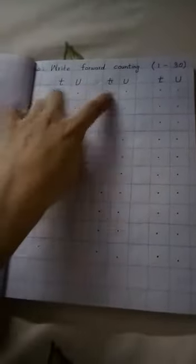Start the work after leaving the back page, and begin from the fourth page. Mention the date and the heading 'Write Forward Counting 1 to 30'. Make columns for T and U - T is for tens and U is for units.